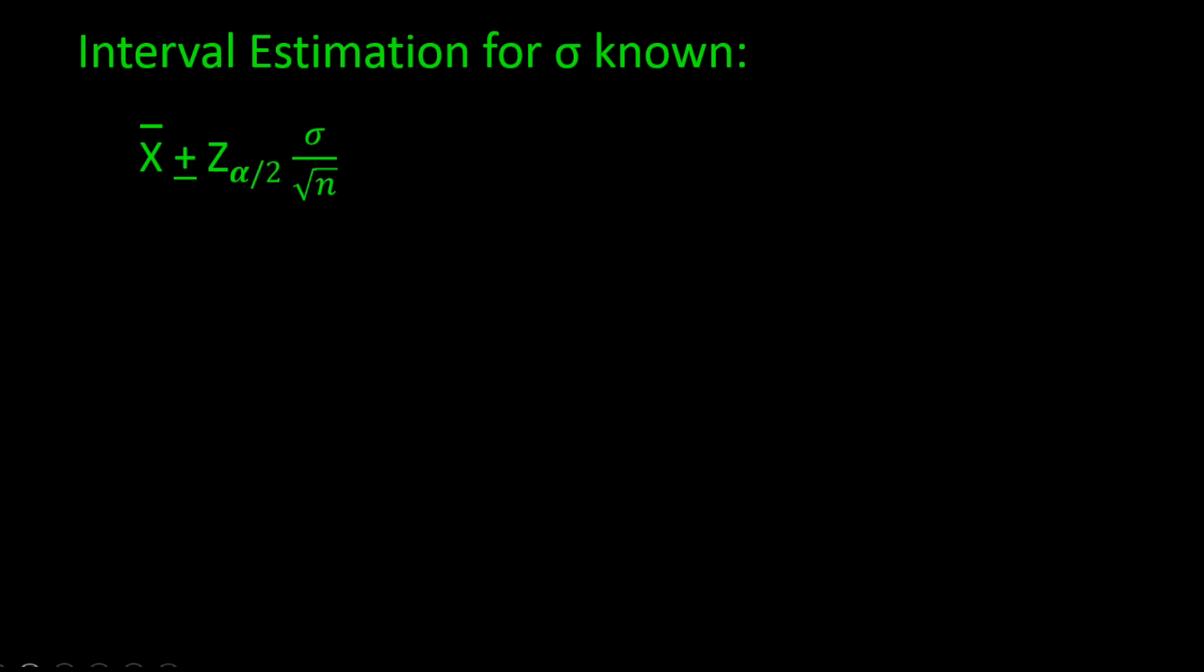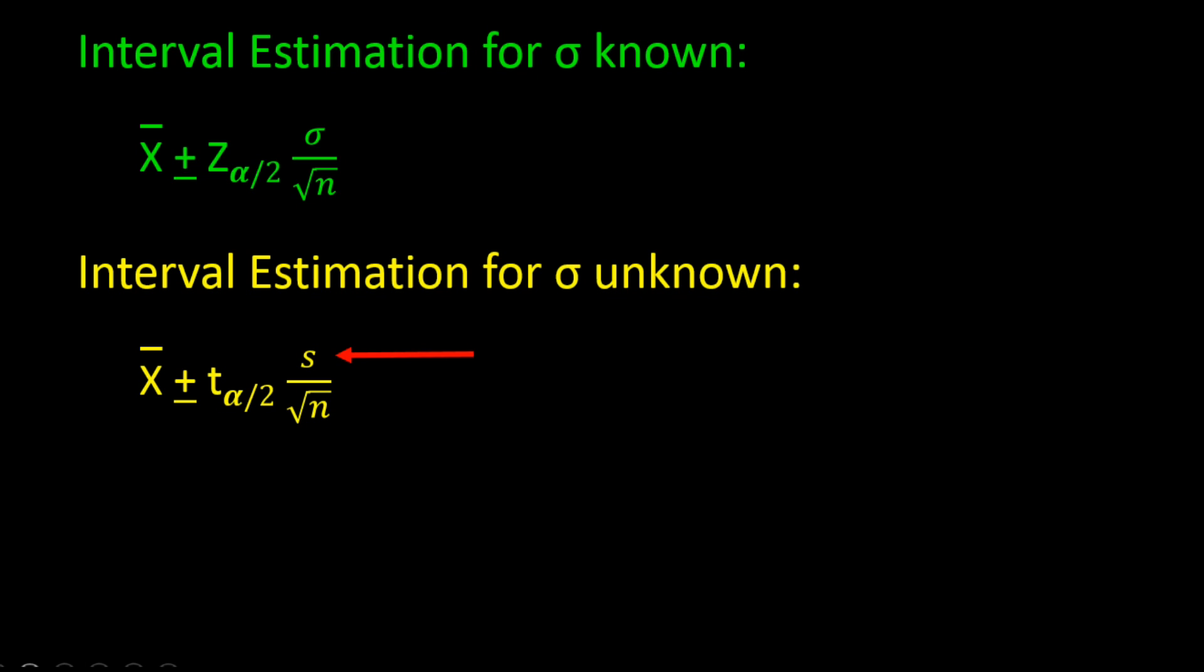Now, let's look at the formula for interval estimation for sigma unknown. Here is the formula. It is very similar to the one above, except note the small differences. First of all, since we are using the formula in the case of sigma unknown, we will need to use S instead of sigma. And since we are estimating sigma using S, then we will need to look up values in the t table so that we have T instead of Z in the formula.